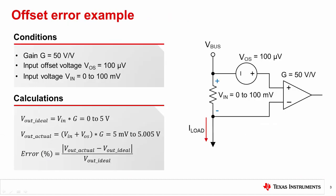Let's look at an example of offset error. This is an example of a referred to input, or RTI, specification. Something must be added to the input before the device gain. For this example, we'll consider an amplifier with a gain of 50 volts per volt and an input offset voltage of only 100 microvolts. The input voltage range VIN is from 0 volts to 100 millivolts.